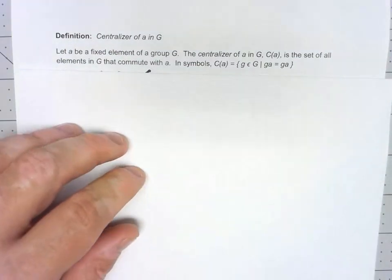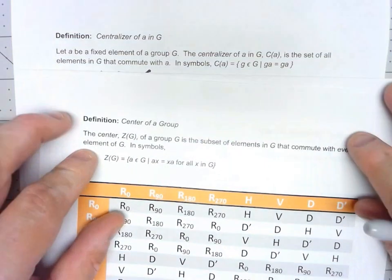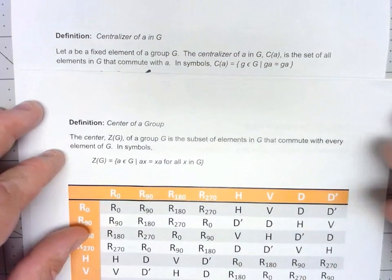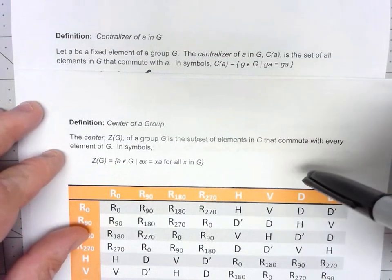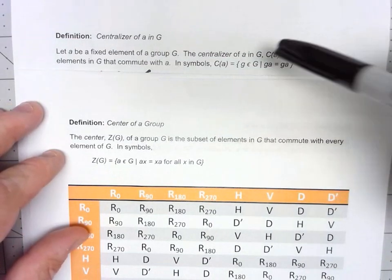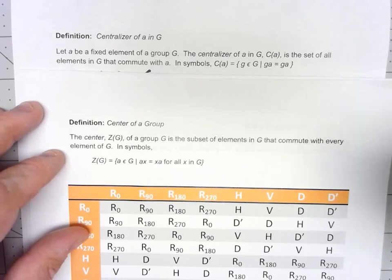At first glance this seems very similar to our definition of the center of a group. But the center of the group are the elements that commute with everything. The centralizer is in reference to a specific element A. I only care about it if it commutes with A. It doesn't have to commute with everything in the group.